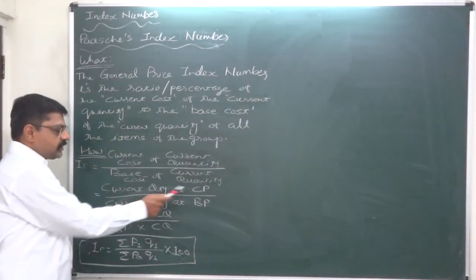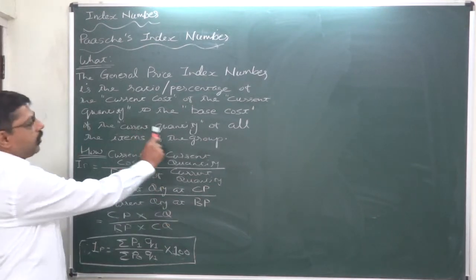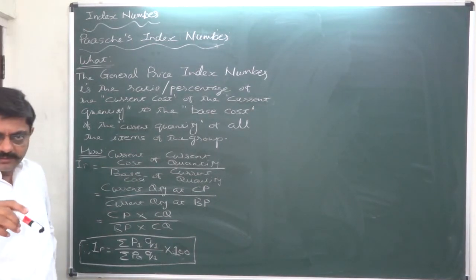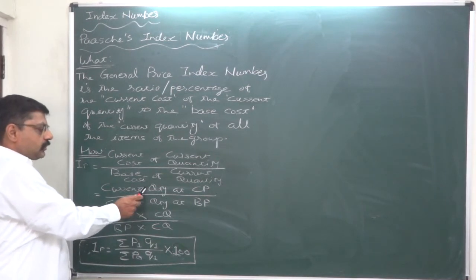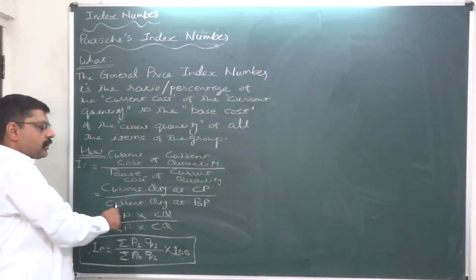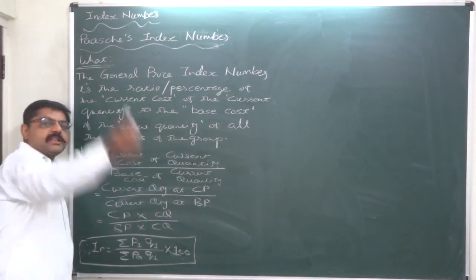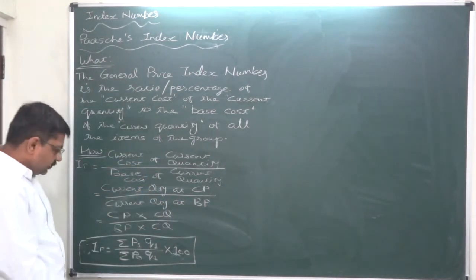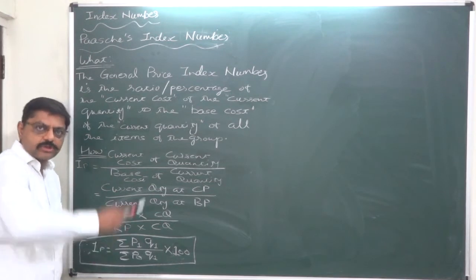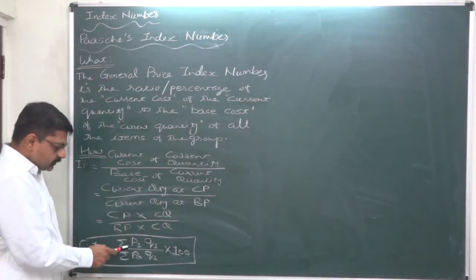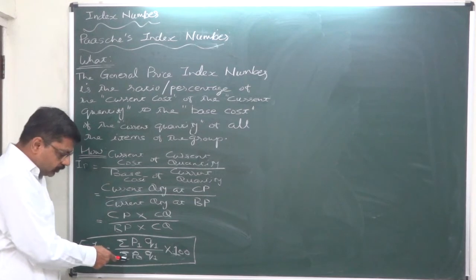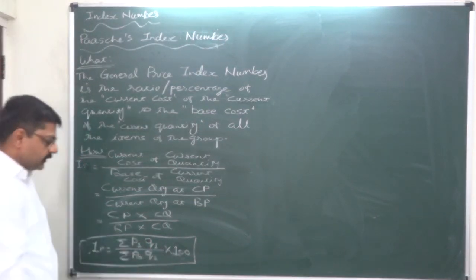So current quantity at current price to current quantity at base price, for all the items in the group. Ultimately that will be the summation. So: summation of current quantity of all items at their current price, divided by the summation of current quantity of all items at their base year price. The formula is: sigma of current price times current quantity, divided by sigma of base price times current quantity, multiplied by 100.